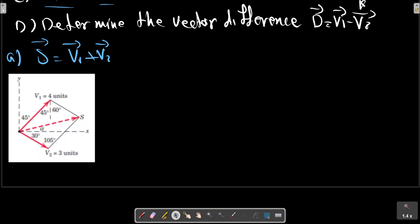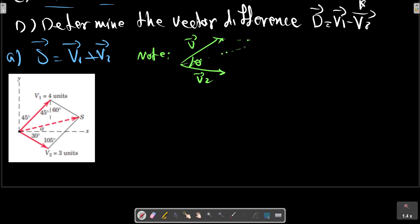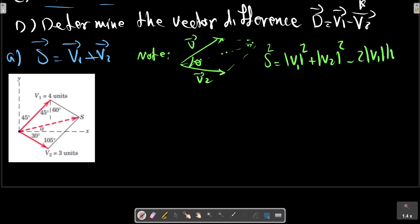Consider this picture. With the parallelogram law, we can write the parallelogram shape, and the diagonal of the parallelogram is the summation of V1 and V2. For two vectors with the angle theta between them, if the summation is S, then S² equals V1² plus V2² minus 2·V1·V2·cos(theta), where theta is the angle between them.